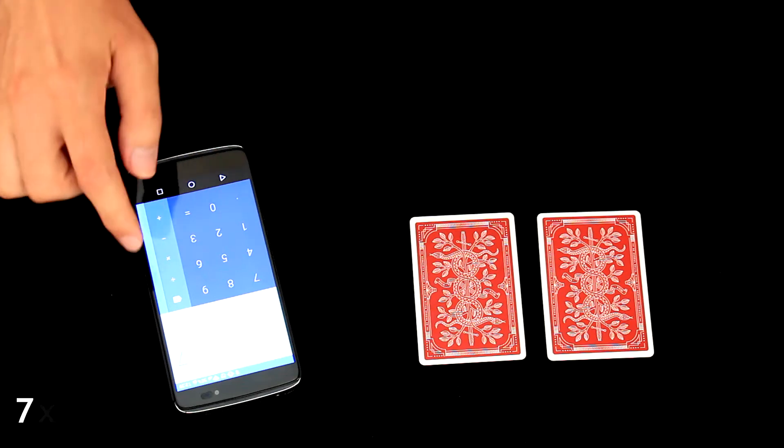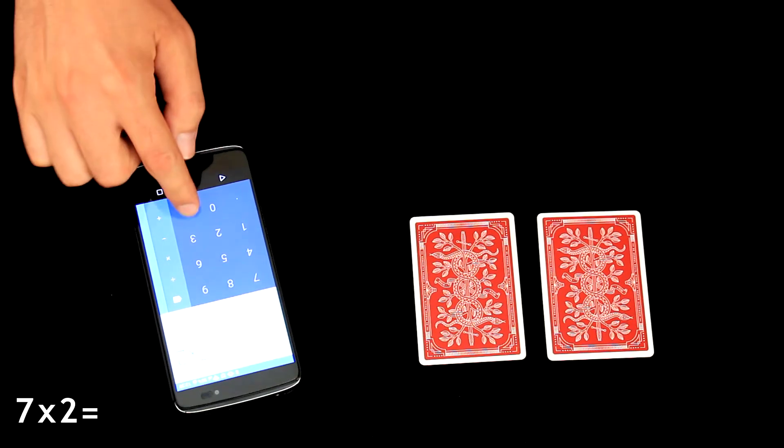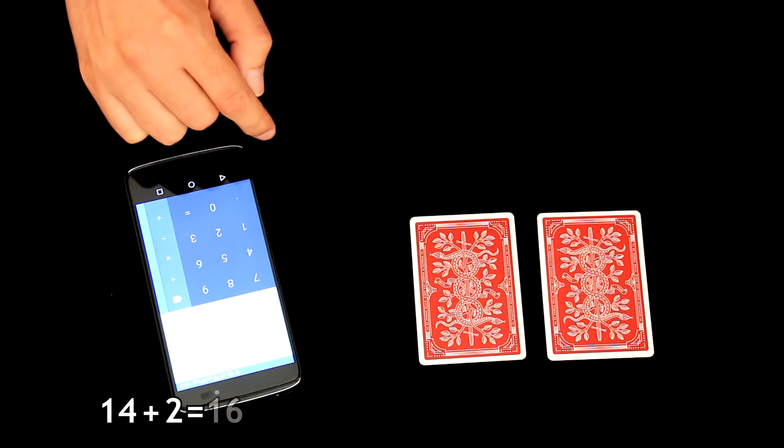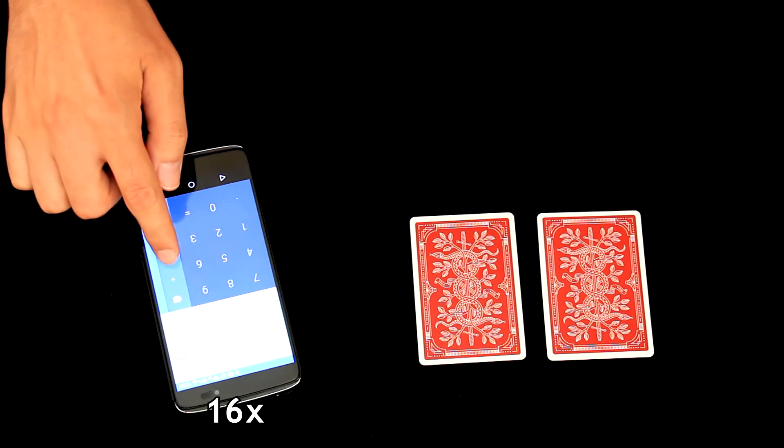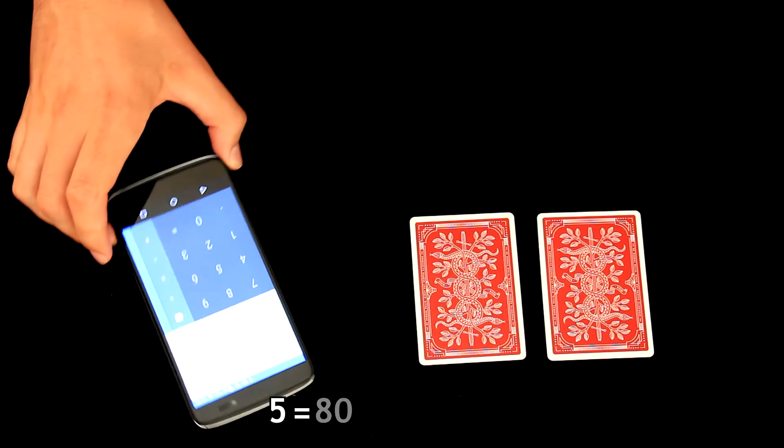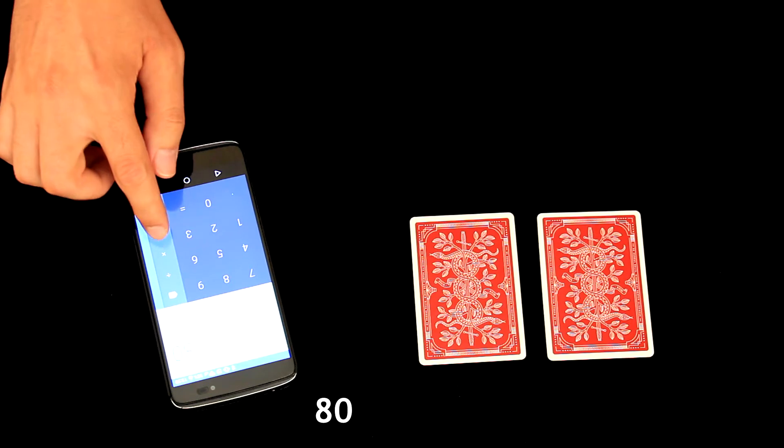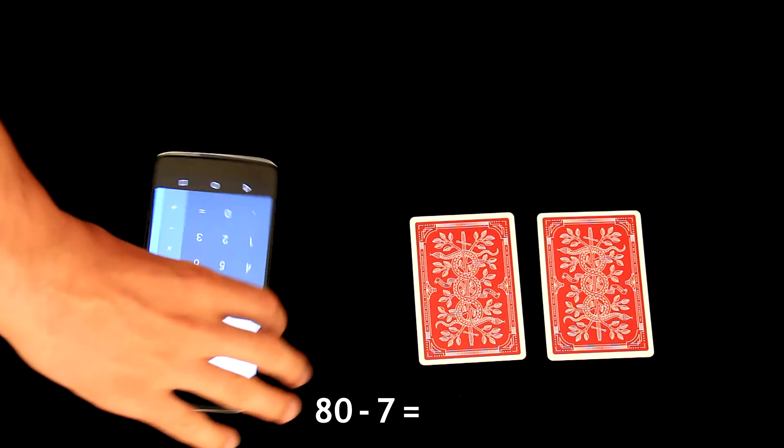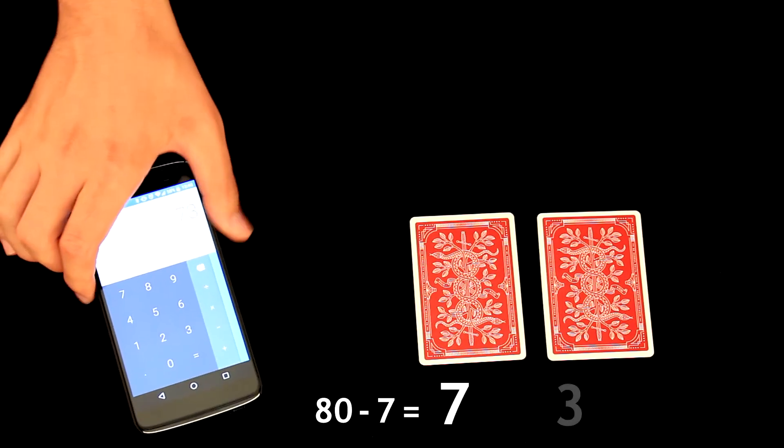And then multiply it by 2, which is 14 in this case, then add 2 and then multiply the result by 5. We have now 80 and finally we will subtract number 7 to get the final result, which is in this case 73.